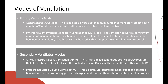SIMV, or synchronous intermittent mandatory ventilation, is another mode where the ventilator delivers a minimum set number of mandatory breaths — which can also be pressure or volume. When the patient breathes outside of that set rate, say 10 times above the mandatory rate of 10, those spontaneous breaths can be supported or not supported — often they're supported with pressure support. There's also APRV, a secondary mode seen in more severe ARDS patients. It's primarily a pressure control mode that allows spontaneous breathing with really long inspiratory times and short expiratory times — a different way of ventilating that can be helpful in severe ARDS.